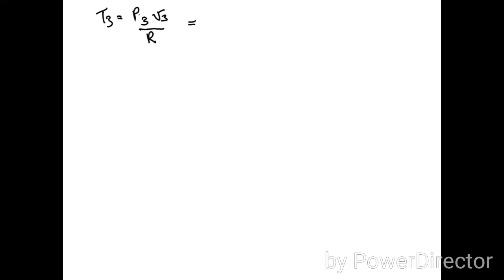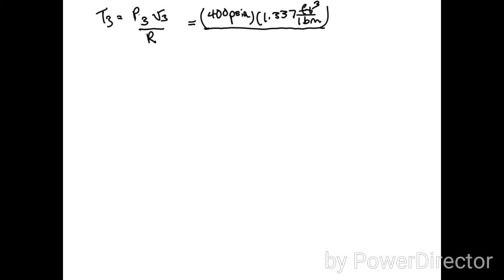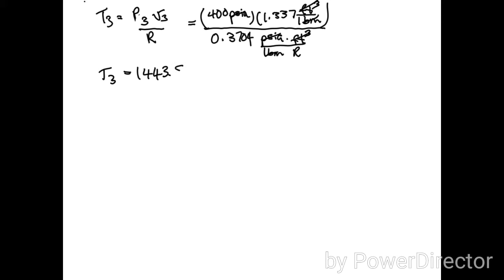To solve for the temperature at state three we use the ideal gas law. The pressure at state three is 400 psia, the volume is the same as at state two — 1.337 ft³/lbm — and we divide by R = 0.3704 psia·ft³/(lbm·R). All units cancel leaving Rankine, giving T3 = 1443.8 R.